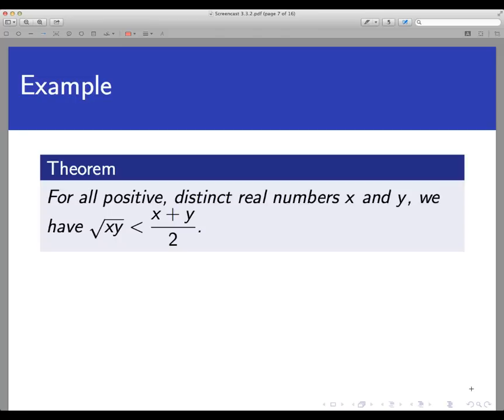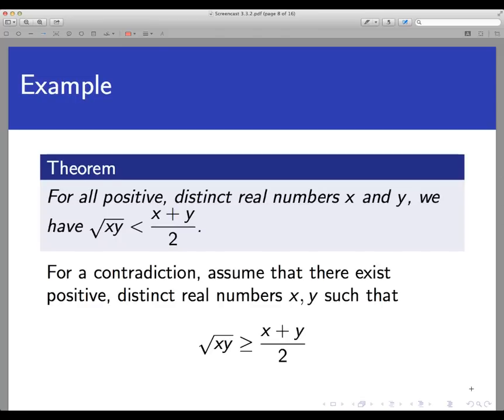We'll see this in just a moment. So to prove this by contradiction, we're going to first assume the negation of the statement we're trying to prove. The theorem statement is universally quantified, so the negation would say there exist positive distinct real numbers, X and Y, such that the inequality goes in the other direction. That square root of XY is greater than or equal to X plus Y over 2.